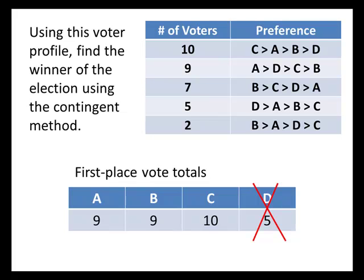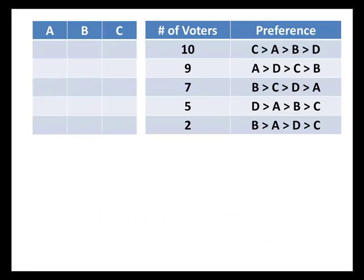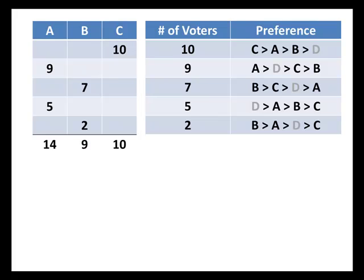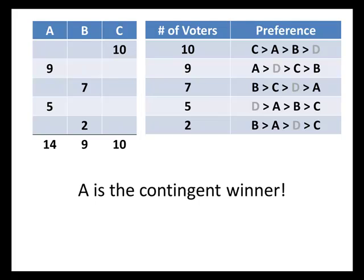We use plurality among A, B, and C. With D eliminated, the ten voters vote for C, the nine voters vote for A, the seven voters vote for B, the five voters had D as their top choice but D is eliminated so they vote for their second choice A, and the last two voters vote for B. Adding up the totals, A is the winner with 14 votes, and so A is the contingent winner.